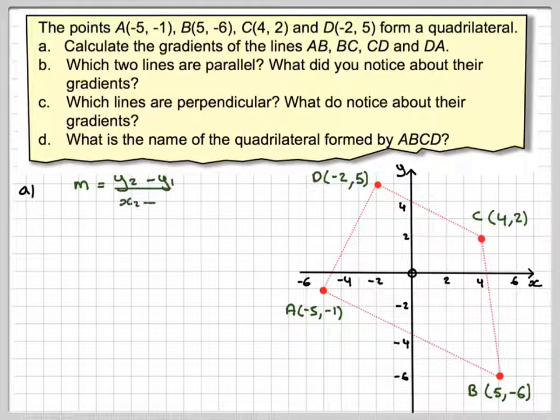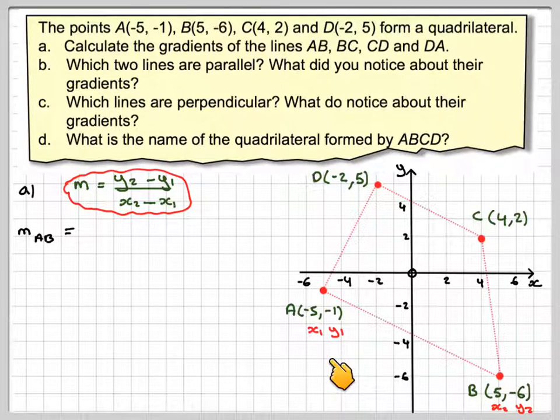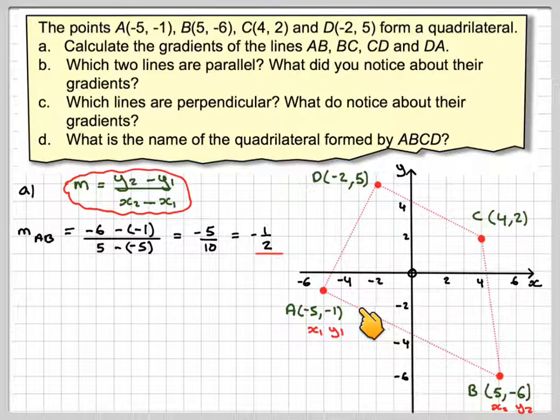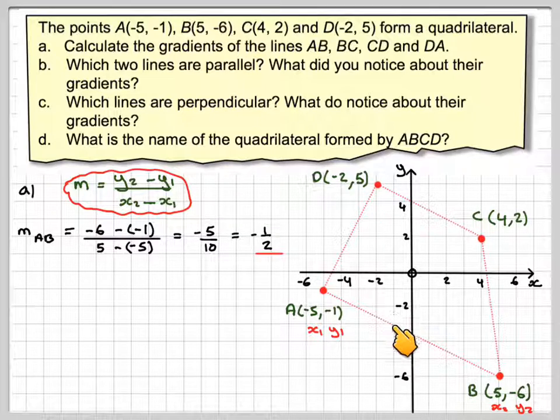So we're going to calculate the gradient of this line here. Labeling up the points and using this formula. So x₁, y₁, x₂, y₂. So it's going to be (-6 - (-1)) over (5 - (-5)). Be careful with those negative numbers. So -6 minus -1 gives me -5, and 5 minus -5 gives me 10. And so that comes down to -1/2. So what that means is for every two squares along, I go one down.